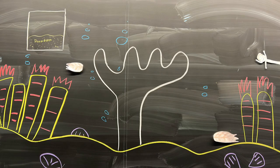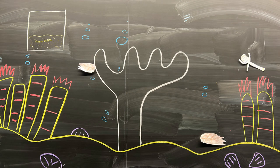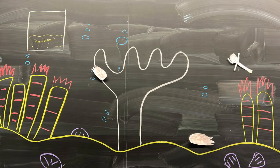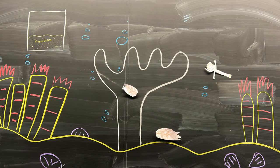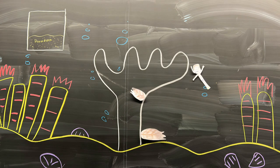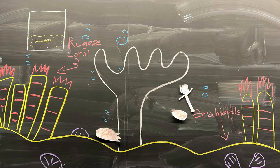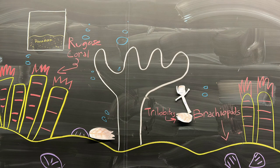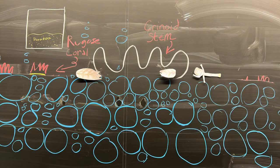Let's take a look back in time, way back in time. The fossils found throughout this time period are mainly small marine animals that lived in the seabeds under the water. These include brachiopods, rugose coral, trilobites, and crinoid stems.